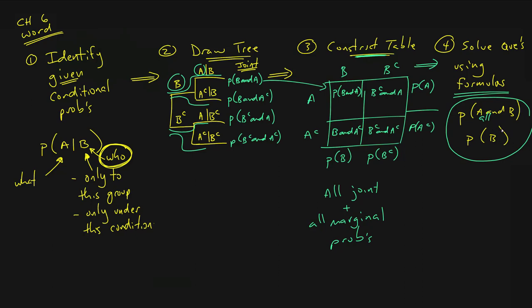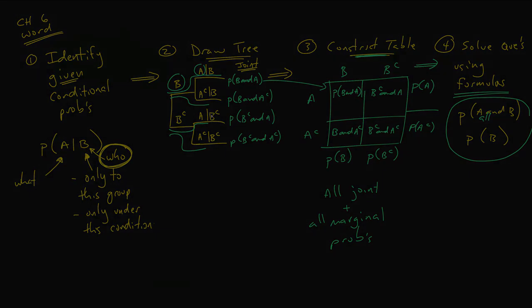So this all starts with step one: properly identifying conditional probabilities. Then we carry through drawing the tree, constructing the table, and finally answering all of our questions using the formulas from this chapter. That's where I'm going to start in the next video — I'm going to read through the problem and identify conditional probabilities to get this whole process started.